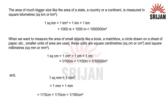For very large areas like the area of a country, continent, or state, we use the unit square kilometers, that is kilometer square. One kilometer square equals 1 kilometer multiplied by 1 kilometer. Since 1 kilometer equals 1000 meters, multiplying 1000 meters by 1000 meters gives us 10 lakh meter squares.